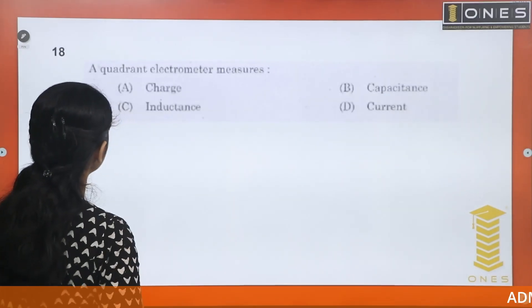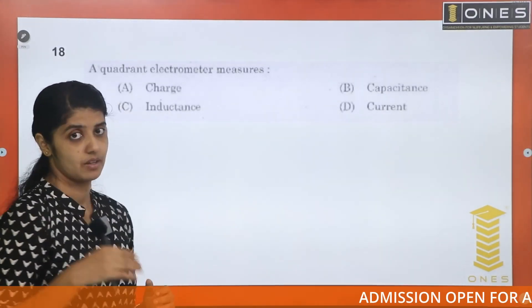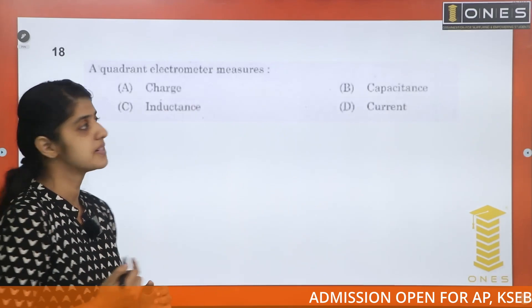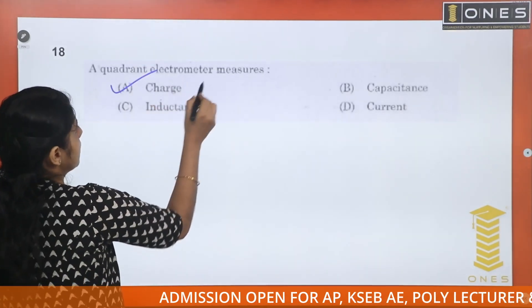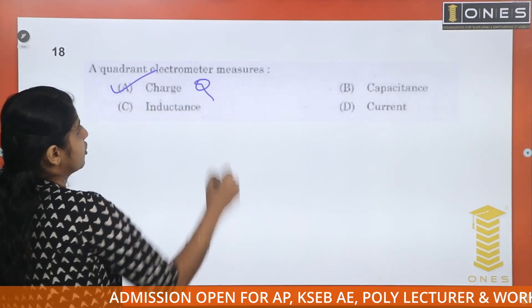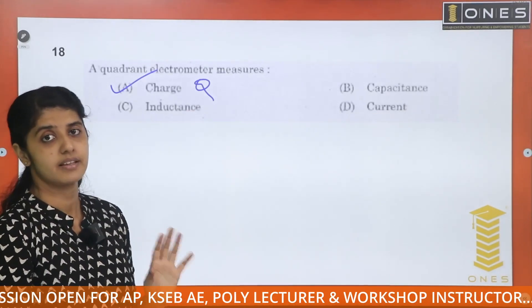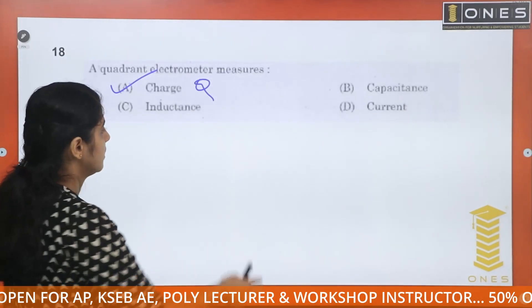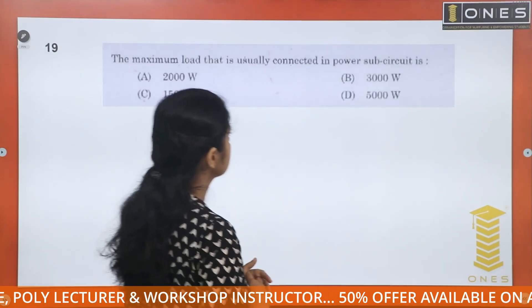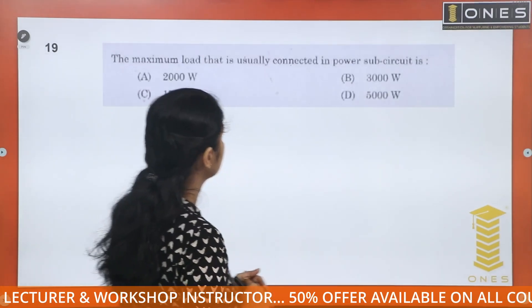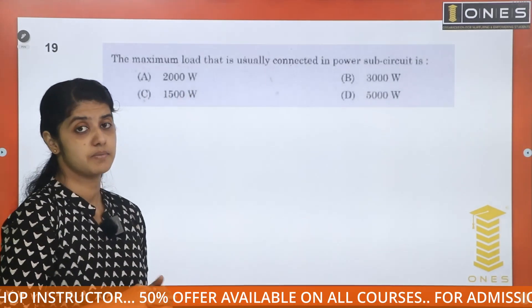The next question: the quadrant electrometer measures charge Q.